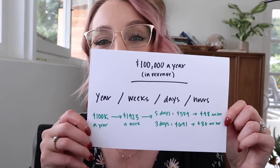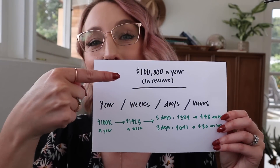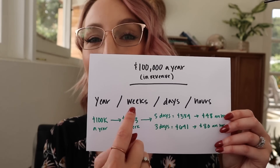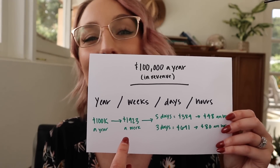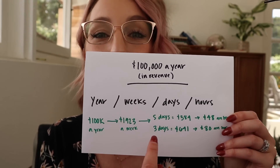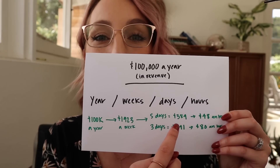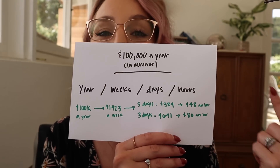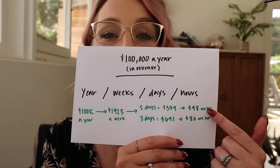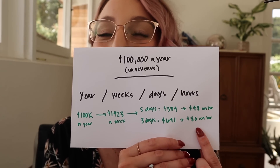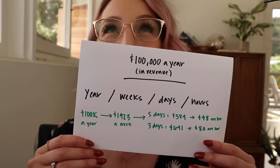Because I'm a visual learner, I created a chart. For instance, if you wanted to make $100,000 a year, divided by 52 weeks, that comes to $1,923 a week. If you work five days a week, you'd need to make a certain daily amount; if you work three days a week, you'd need a higher daily amount. Then with eight hours a day, you'd need to make $48 an hour working five days a week, or around $80 an hour working three days a week.